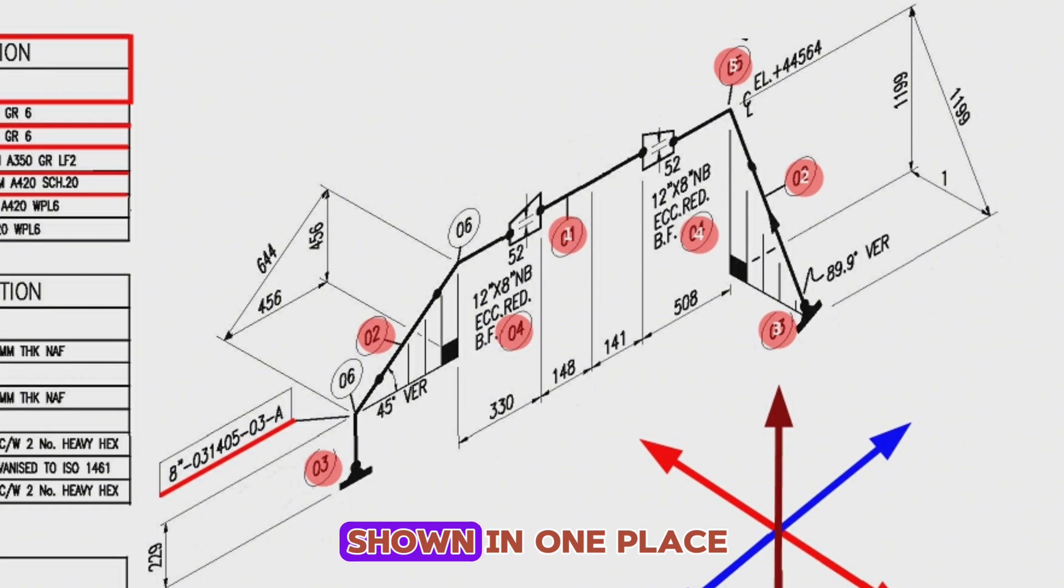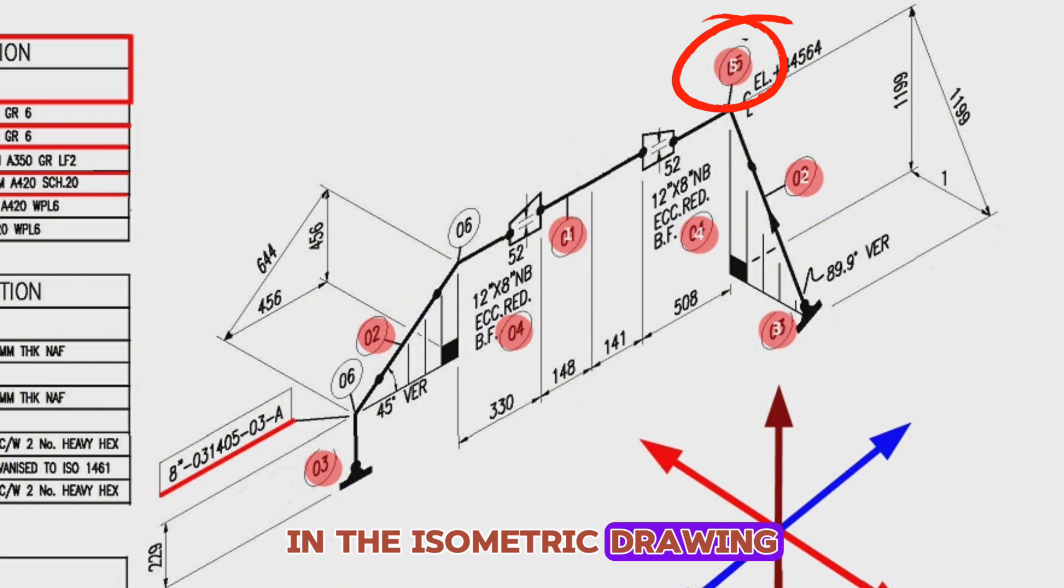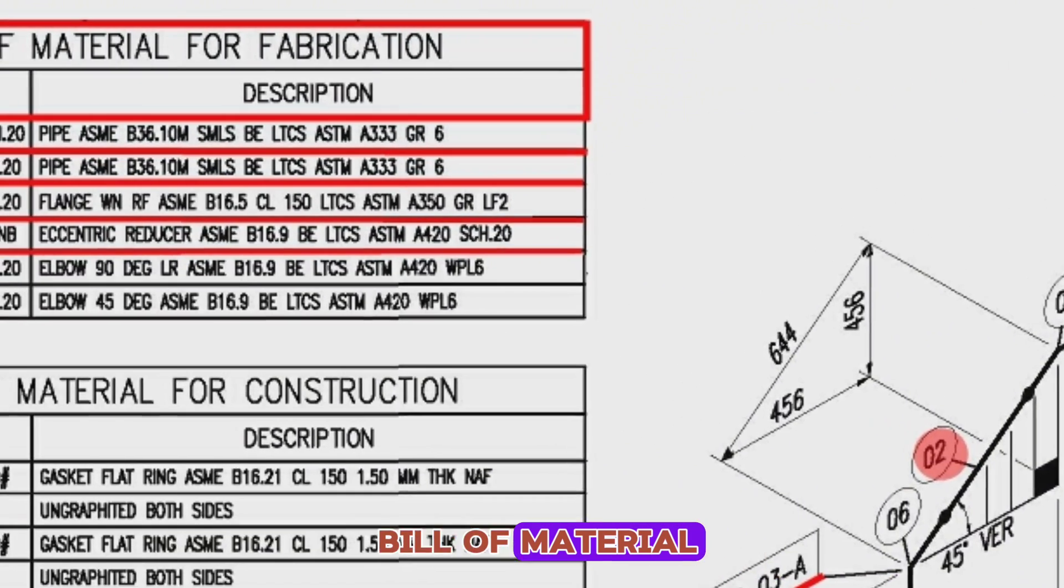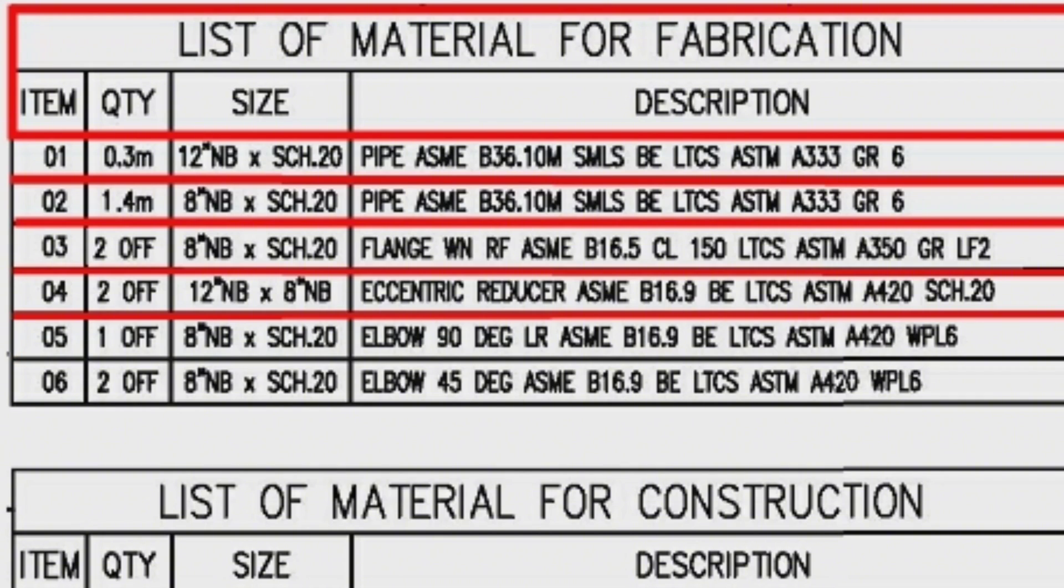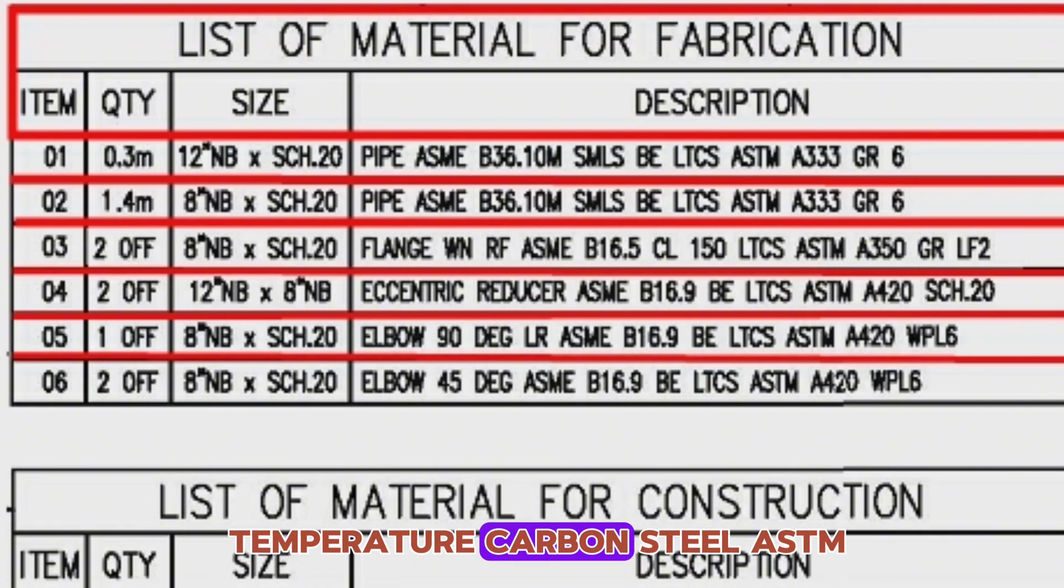Item number 5 is shown in one place in the isometric drawing. Let's look at the bill of material. Item 5, quantity is 1-off, size is 8-inch NB, schedule 20, elbow 90-degree long-radius, ASME B16.9, low-temperature carbon steel, ASTM A420.